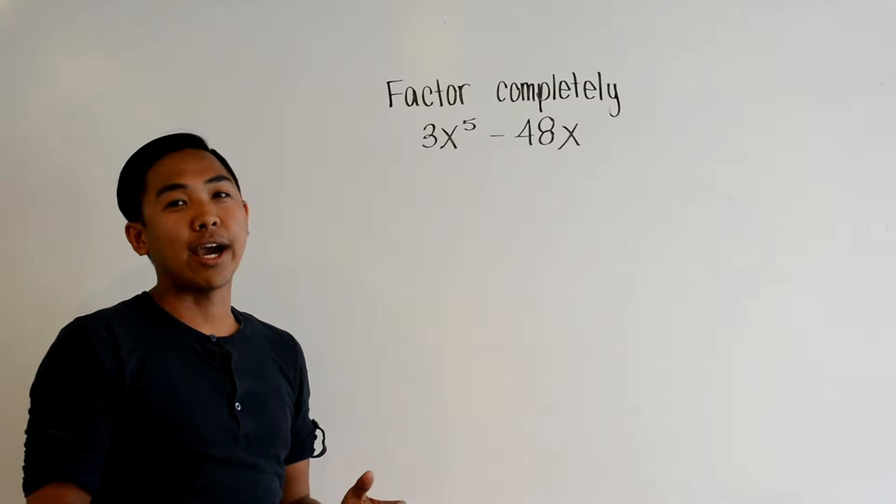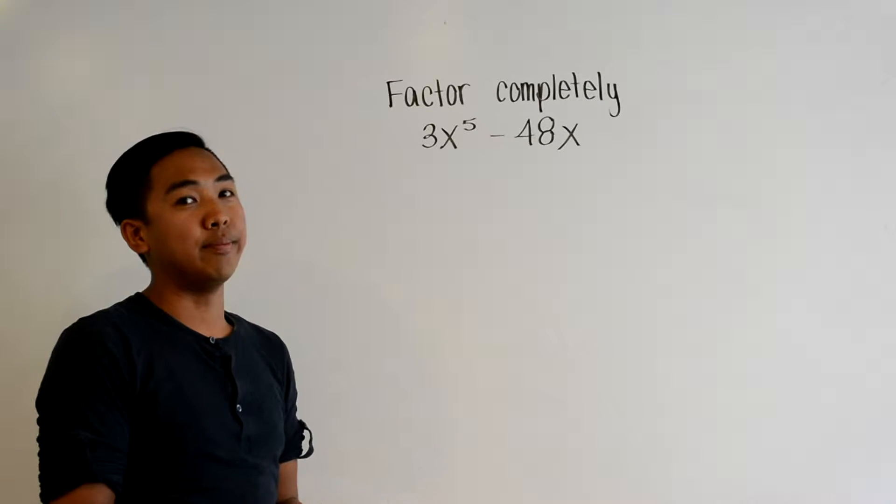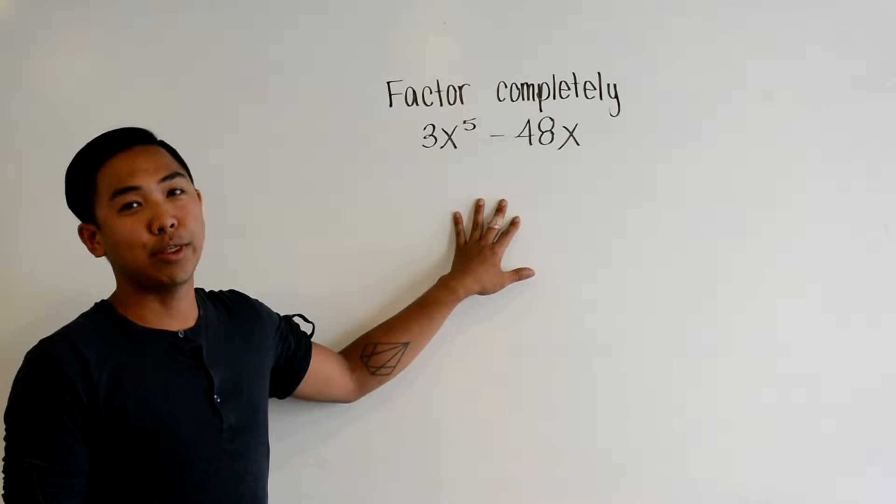The first thing you should try and do with any factoring question is pull out the common term. In this case it happens to be 3x.